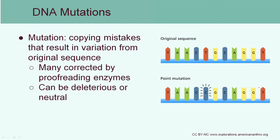If there's a mistake during copying, you get something called a mutation. The DNA can proofread the new molecule it just made to try to correct errors, making it very accurate. But because DNA is such a long molecule with millions of nitrogen bases, mutations do sometimes happen. For example, where there should have been a thymine, a cytosine was accidentally inserted. This mutation may or may not be harmful — we won't know the effects until we look at the resulting protein.